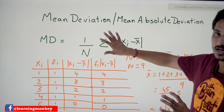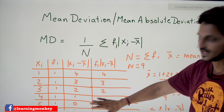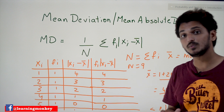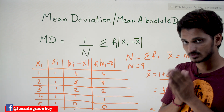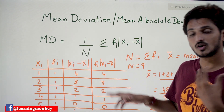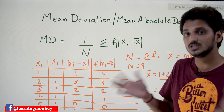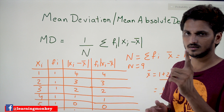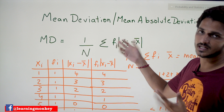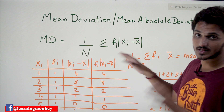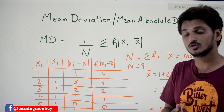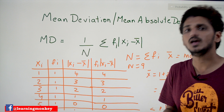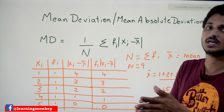In our example we are going to discuss only individual data points — we are not considering a frequency distribution, so all frequency values are 1. If you multiply with 1 nothing changes. In our next class we are going to discuss how to find mean deviation and standard deviation for frequency distribution data with more examples.